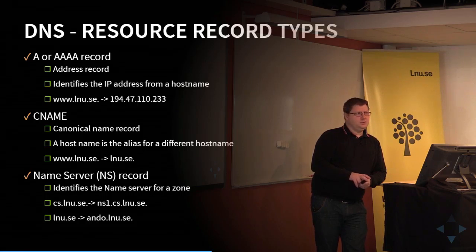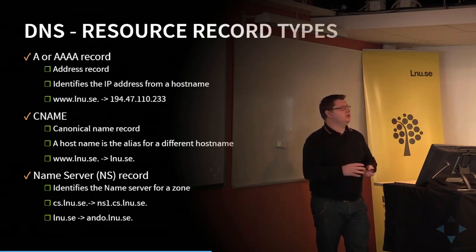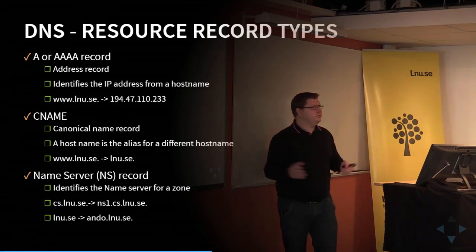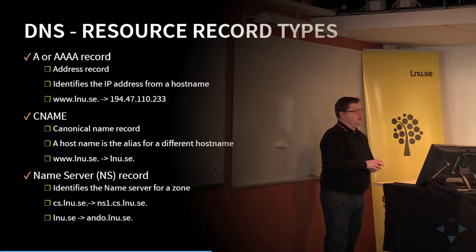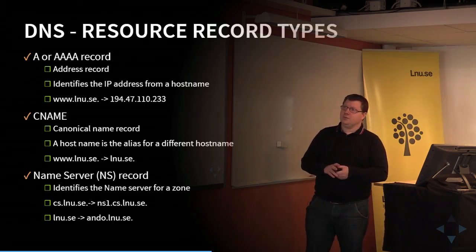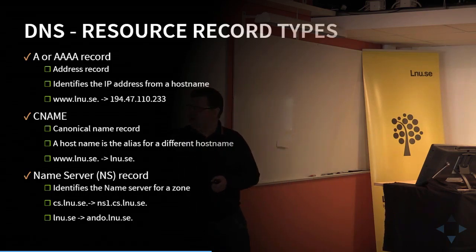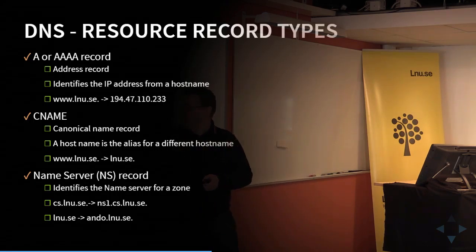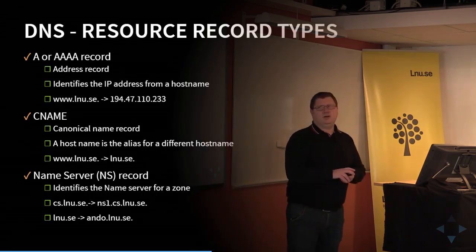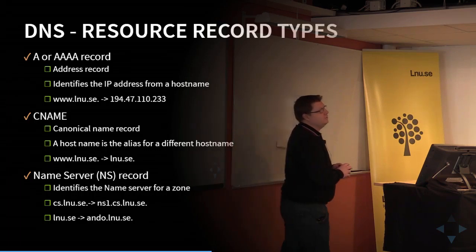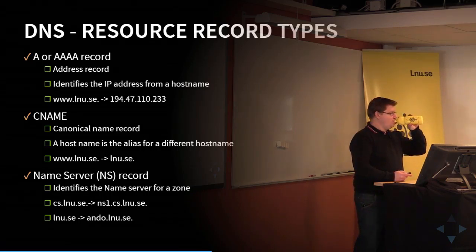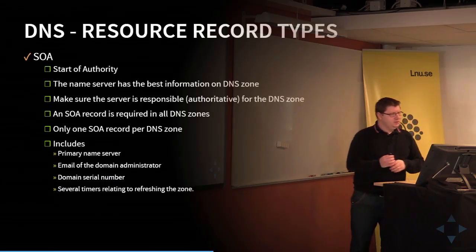Then we have the name server records, which identify which are the name servers for a domain. We usually have at least two name servers for each zone, because if one server goes down, we can still connect to a secondary server to get the records we want. For big domains, there can be a lot of name servers connected. Name server records are also used for delegation — they point out which name server to go to for more information about a sub-domain.